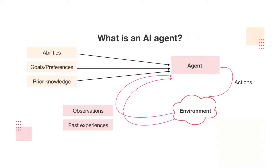Finally, action involves using actuators to affect the environment, like moving a robot arm or responding to a user's query. These components work together to form a cohesive mechanism by which an intelligent agent interacts with the world.